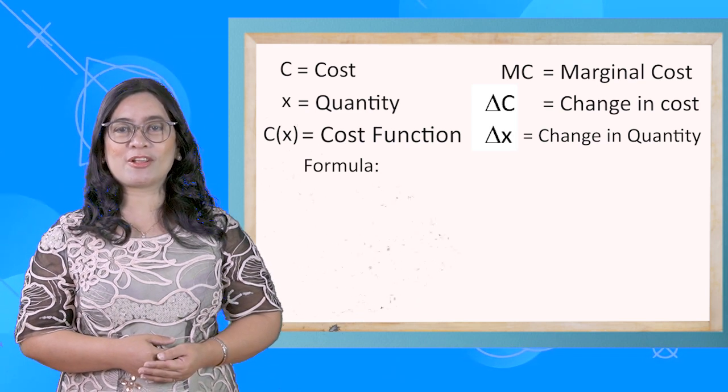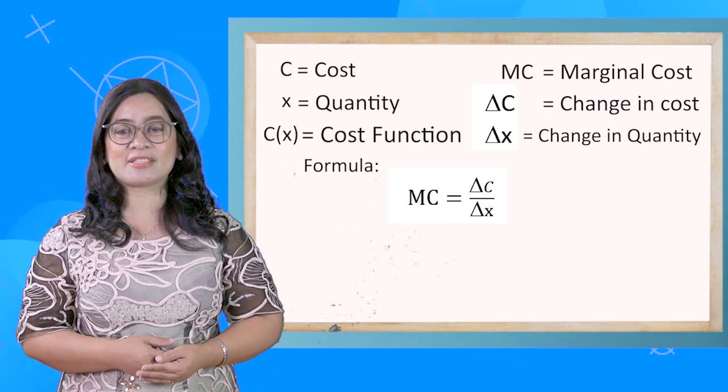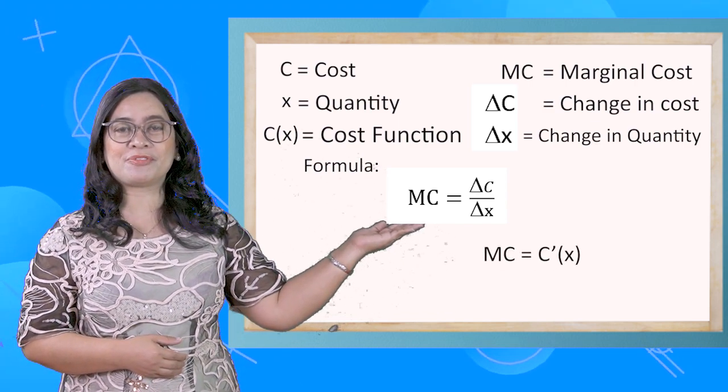Then, the formula for marginal cost is MC = ΔC/Δx = C', or the first derivative of the cost function.